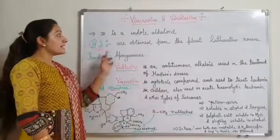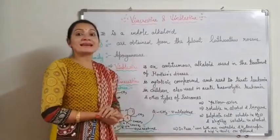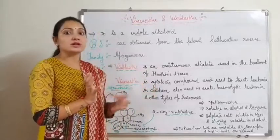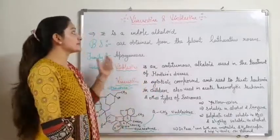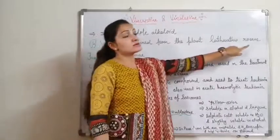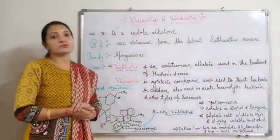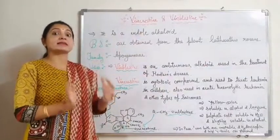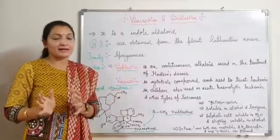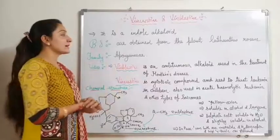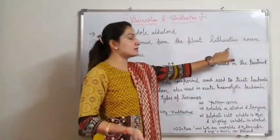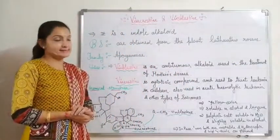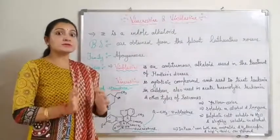The biological source: Vincristine and Vinblastine are obtained from the plant Catharanthus roseus, also known as Vinca. The biological source of Vinca is Catharanthus roseus, belonging to the family Apocynaceae. So Vincristine and Vinblastine are alkaloids present in the Vinca plant, obtained from Catharanthus roseus of family Apocynaceae.